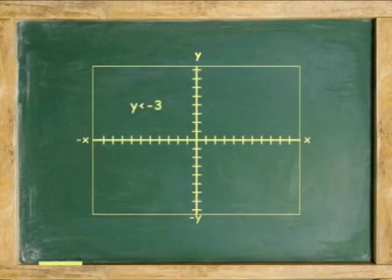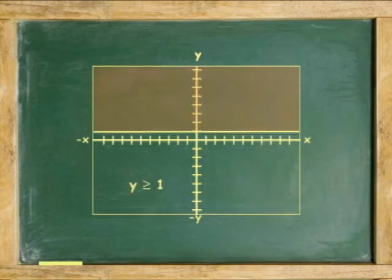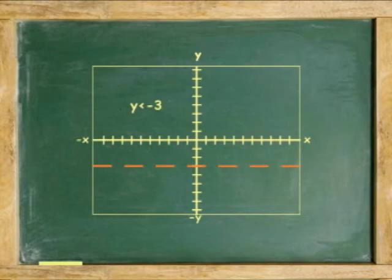Another example: graph the inequality y is less than negative 3. Again, graphed in two dimensions, an inequality with only one variable is either vertical, x only, or horizontal, y only. In this case, it is horizontal, passing through point y equals negative 3. Because the y in the inequality indicates less than, the solution area is found below the dashed line.